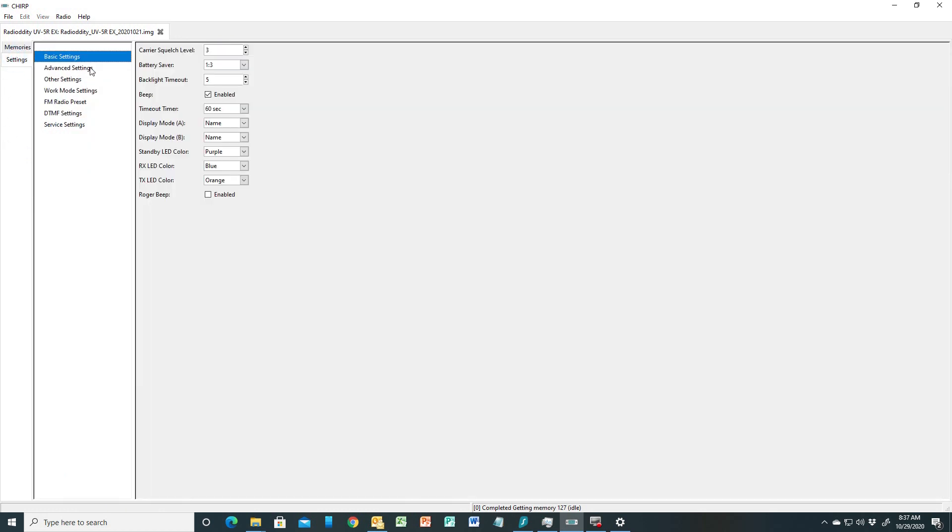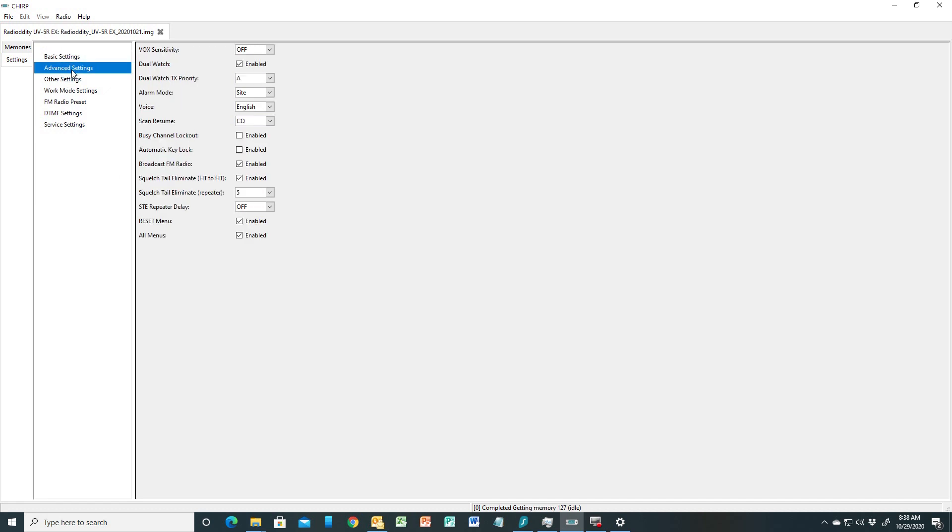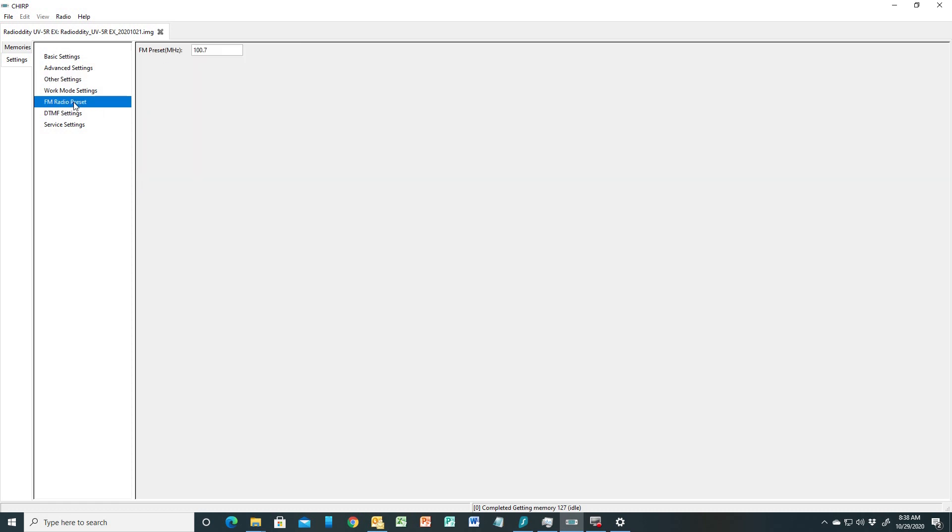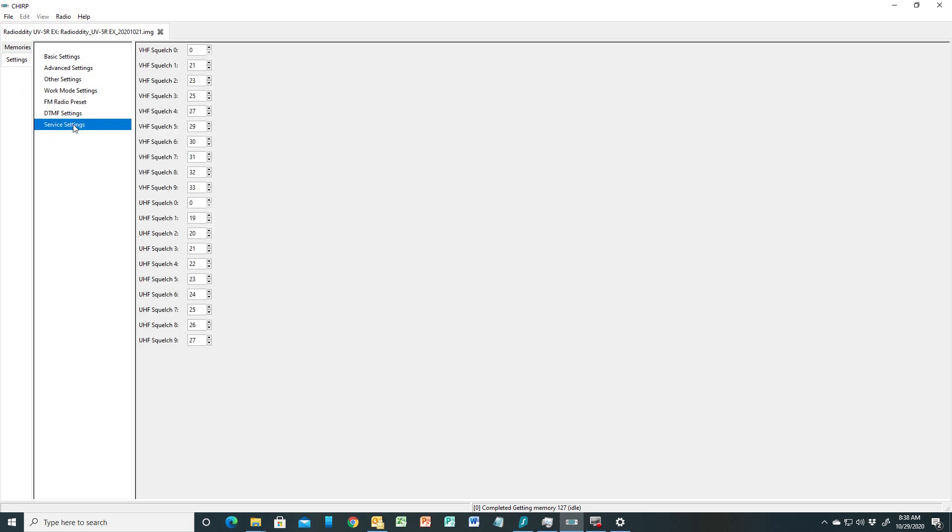Once you've got it loaded, then you can do some really interesting things. So first, if we go to the settings, you can see that there are several submenus of settings that you can put into your radio, such as the carrier squelch level, battery saving, colors of the screen, depending upon what the screen's doing, and so forth. There are advanced settings, the voice that the radio uses, as you can see there, a variety of other settings. In this case, I put my call sign and my name on the power on message. So if I go to my FM radio mode in my radio, that's the channel or the frequency that it's going to come up on. DTMF settings, various service settings, and so forth, that are all available via the menu in the radio. But much easier to deal with here.